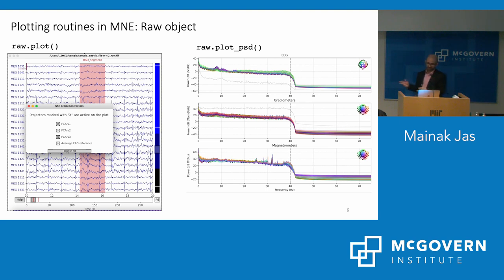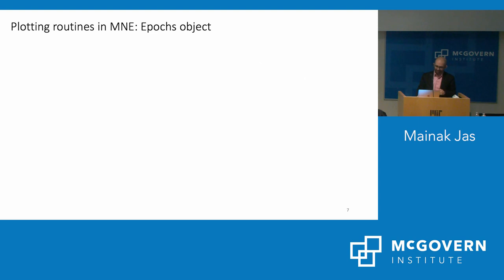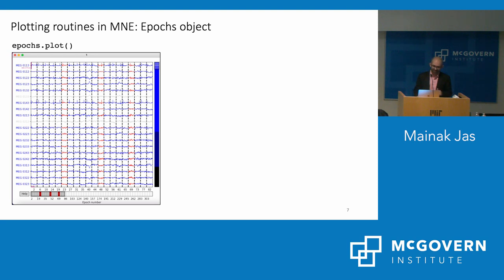You can also look at power spectral density with raw.plot_psd(), which is useful for understanding how the data was filtered, identifying frequency artifacts, and spotting brain rhythms of interest. This works not just with raw data — you can do epochs.plot() and get a similar interface where you can mark bad channels and bad epochs.